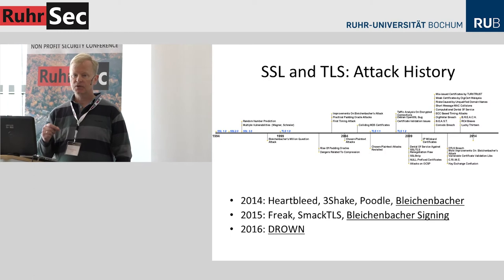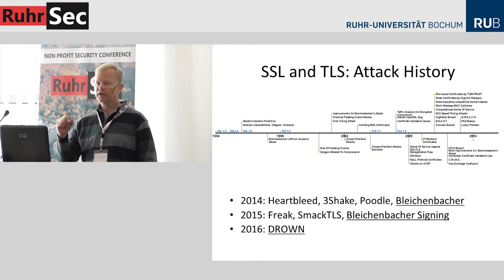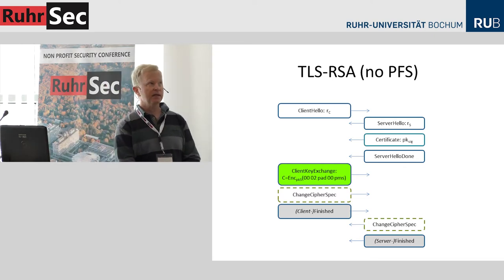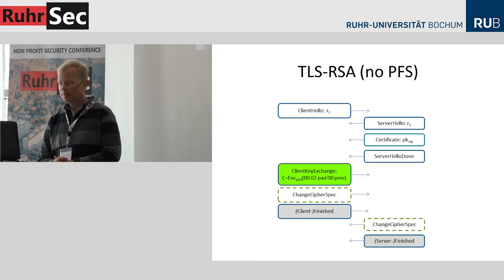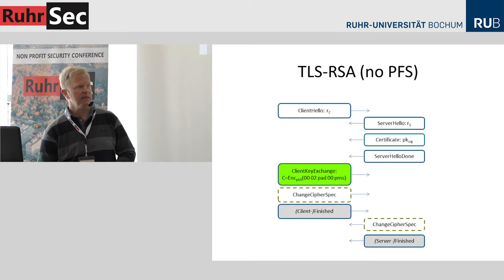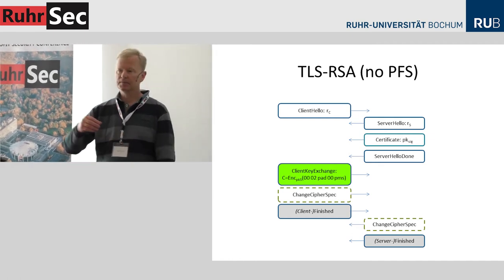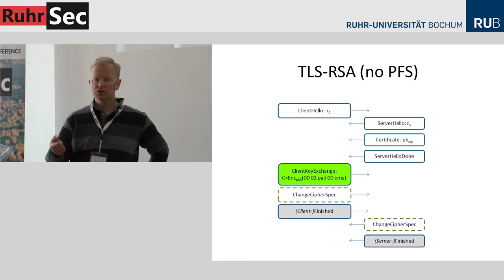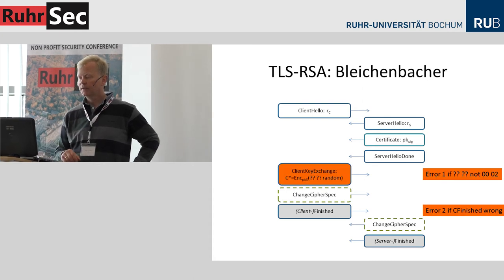I want to concentrate on Bleichenbacher attacks because we need these to show that TLS 1.3 may not be the complete solution. What is a Bleichenbacher attack? Bleichenbacher attacks only work for TLS RSA, which will be eliminated in TLS 1.3 — so apparently this should not be an issue anymore. What I want to show is that Bleichenbacher attacks are very persistent, occurring again and again over time. The basis is the client key exchange message: there is a padding starting with two fixed bytes — 0 and 2 — which is checked after decryption.